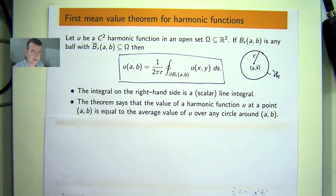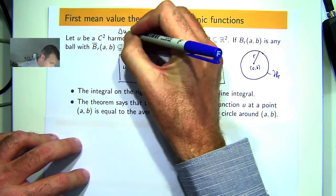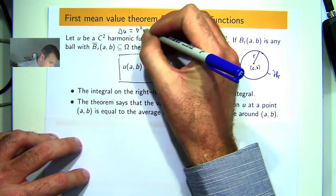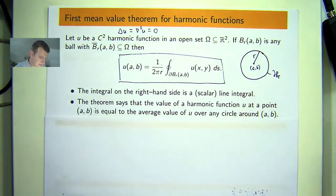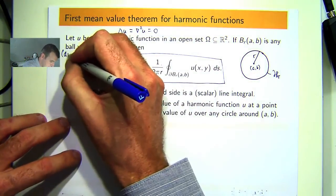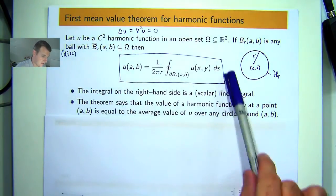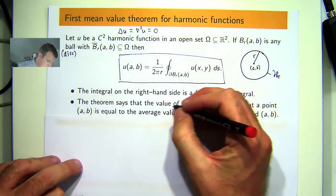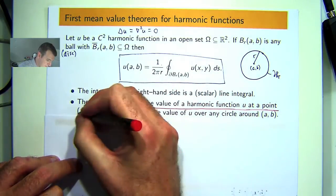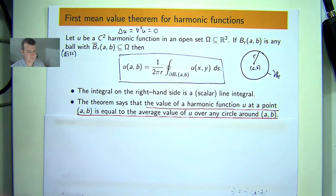Let's just read through the theorem now that we have some intuition. Let u be a C2 harmonic function. So, delta u equals nabla squared u equals zero in some open set omega, which is lying in the plane. If we have a disk with its closure lying in omega, then we have the following. The value of a harmonic function u at a point ab is equal to the average value of u over any circle around that point.